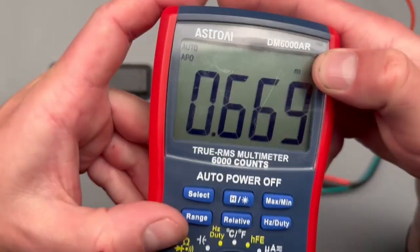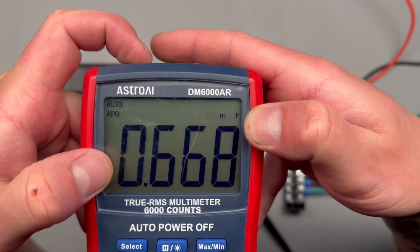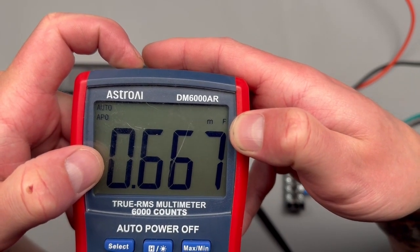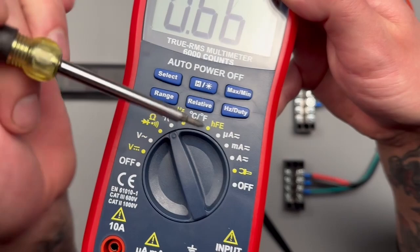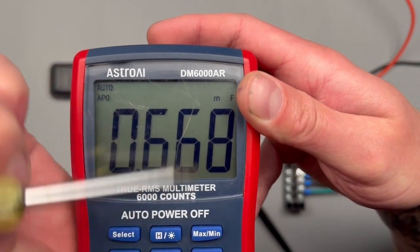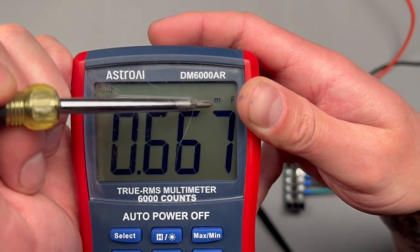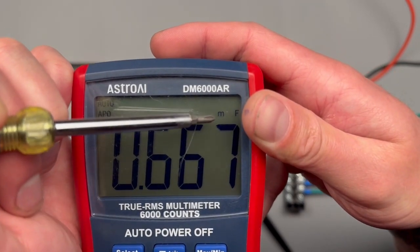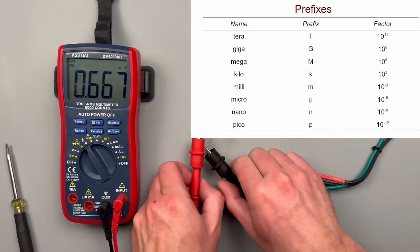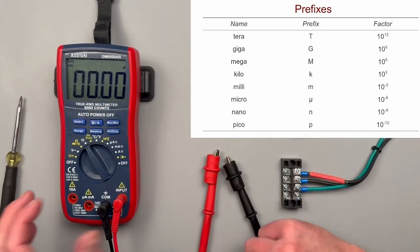Again we have this lowercase m and this f. The f is for farad—that's the unit of measurement for a capacitor. The m is for milli. If you see a little u pop up in this upper right hand corner, that's going to be for micro. And if you see an n, that's going to be for nano. Make sure after you test your capacitor you're going to want to discharge it so that it doesn't discharge accidentally.